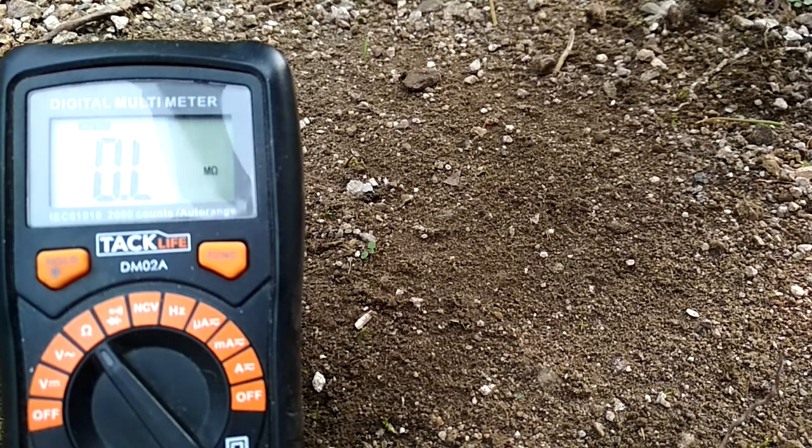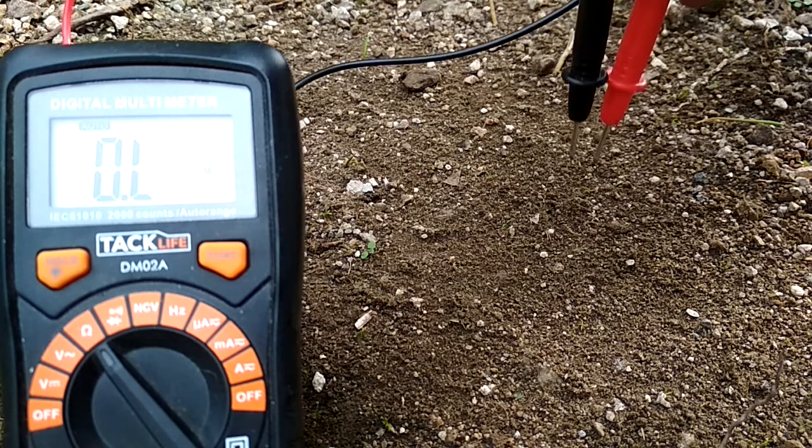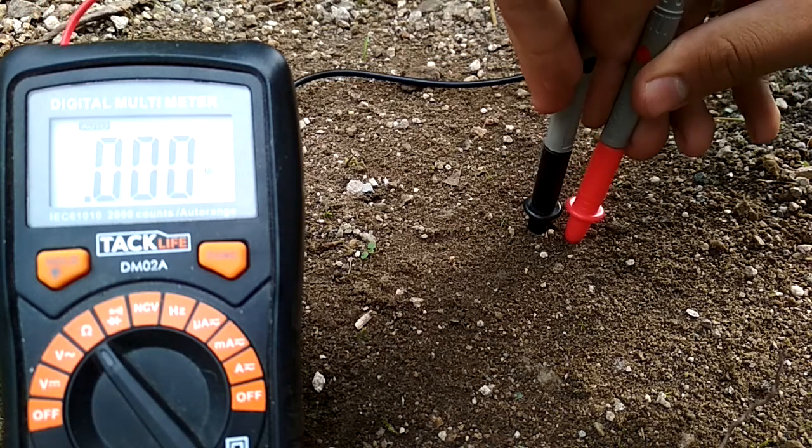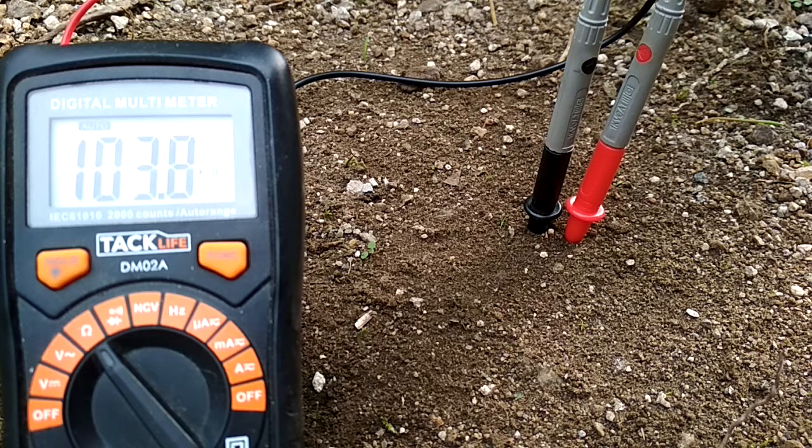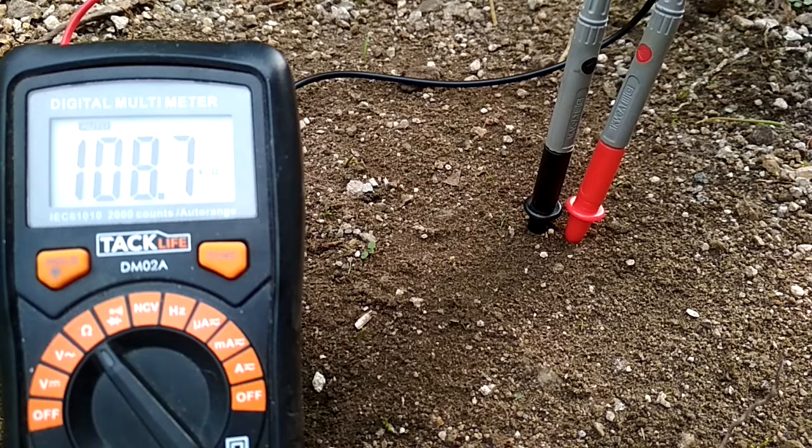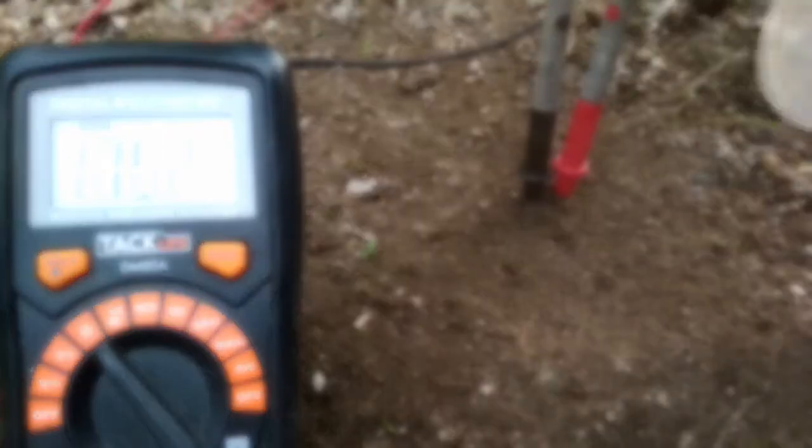The first thing I had to do before designing the circuit was understand what kind of resistance dirt has. To do this, I just stuck the two probes of my multimeter into the ground, about one centimeter apart from each other. This gave me a reading of about 100 kilohms for fairly dry dirt.